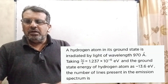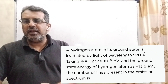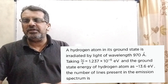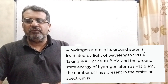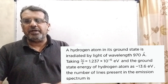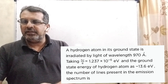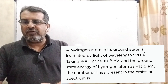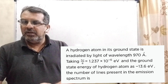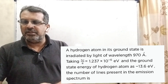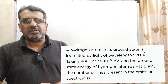Now here is the question. A hydrogen atom in its ground state is irradiated by a light of wavelength 970 angstrom. Taking hc/e equal to 1.237 × 10⁻⁶ electron volt meter and the ground state energy of hydrogen atom is minus 13.6 electron volt. The number of lines present in the emission spectrum is — this question is from JEE 2016 Advanced.